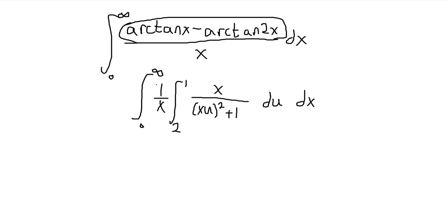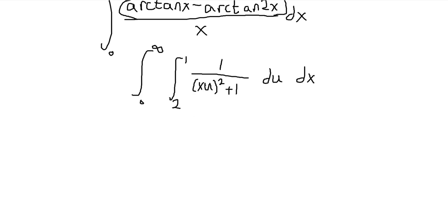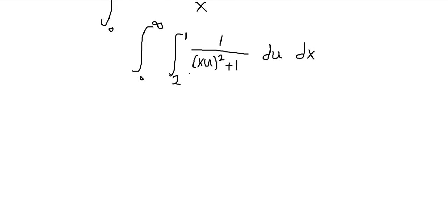And then I still have this 1 over x dx integral 0 to infinity. So basically this 1 over x and this x cancel each other out, and I'm left with this, and then I want to switch the order of integration.